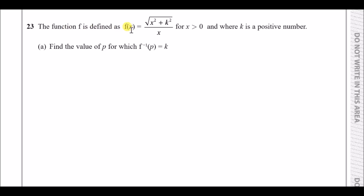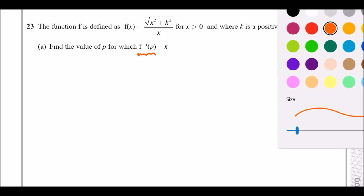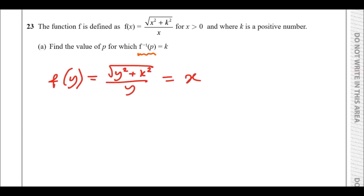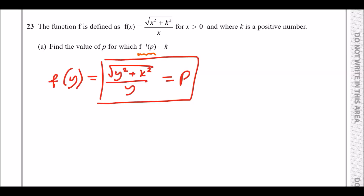Finally, number 23. The function f is defined as f(x) equals the square root of x squared plus k squared, all over x, for positive values of x, where k is a positive number. Part a: find the value of p for which the inverse function at point p equals k. To find the inverse function, replace f(x) with y, giving the square root of y squared plus k squared over y, and set equal to x — replacing x with p.